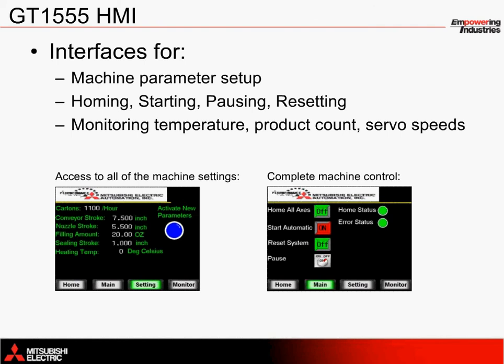The GT1555 graphic operation terminal complements the filling application with easy-to-configure user screens for operator control. The screen on the left illustrates how an operator can interact directly with the machine during initial setup. These settings are directly written to a structured text PLC program to initialize or reinitialize variables such as the cartons per hour, cam stroke amounts, the heating temperature, etc. A screen is also included to start and stop the machine's operation, reset the system, perform homing, and to monitor for errors.